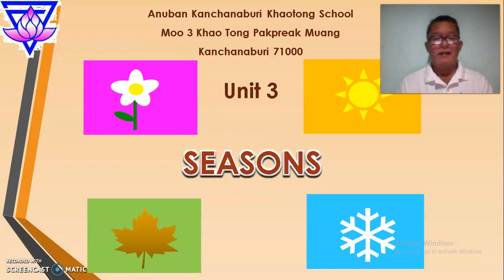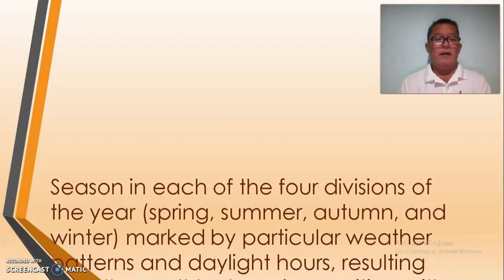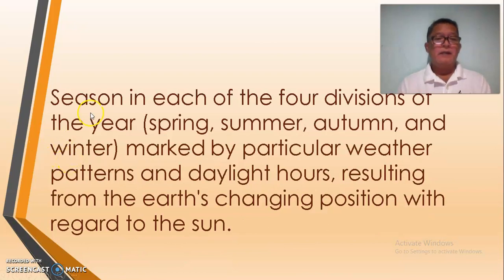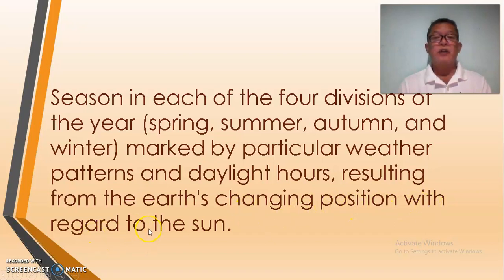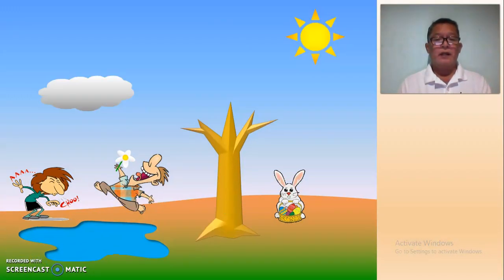Our lesson for today is about seasons. The meaning of season: each of the four divisions of the year — spring, summer, autumn, and winter — marked by particular weather patterns and daylight hours, resulting from the Earth's changing position with regards to the Sun.